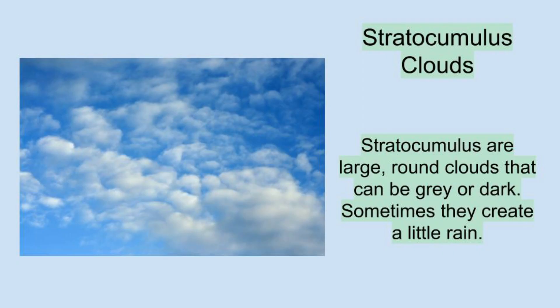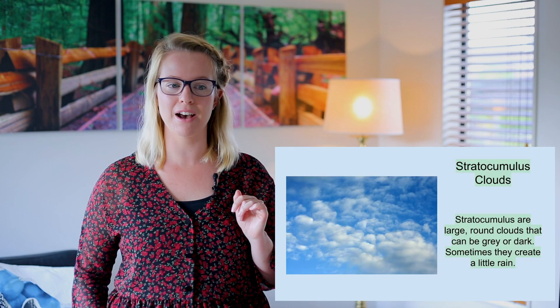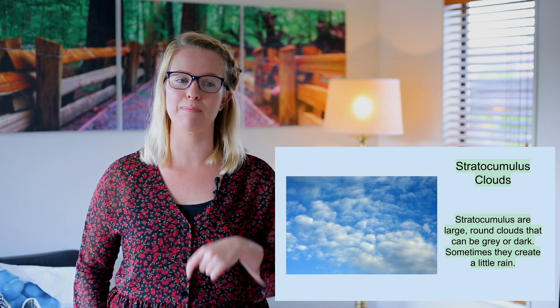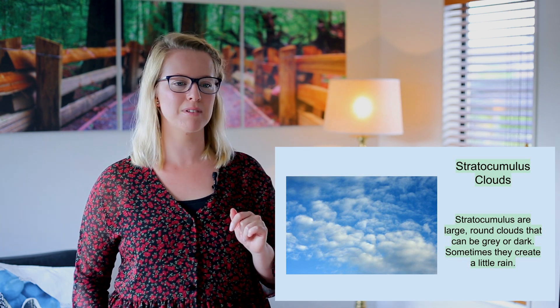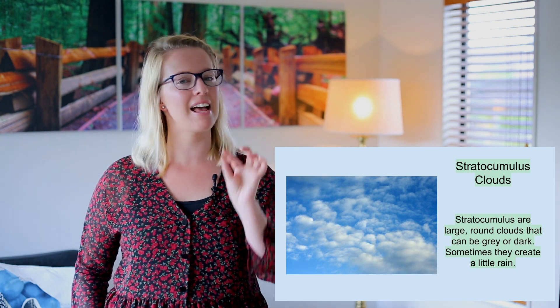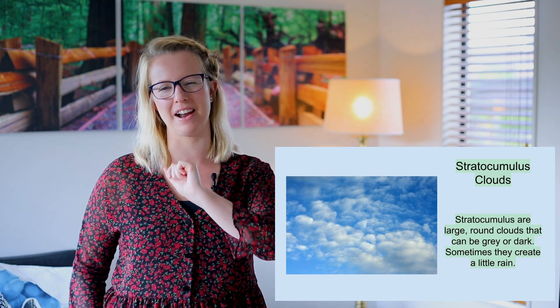Then we have stratocumulus clouds. Stratocumulus are large round clouds that can be grey or dark. Sometimes they create a little bit of rain.